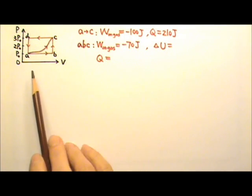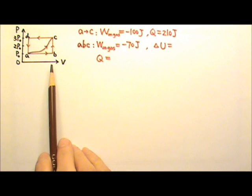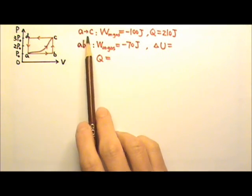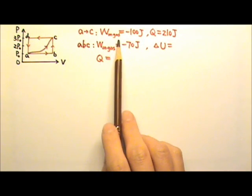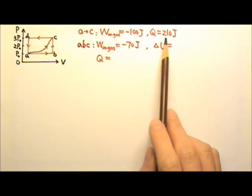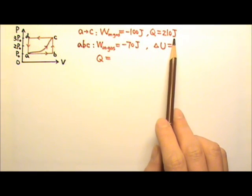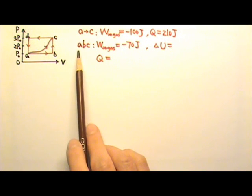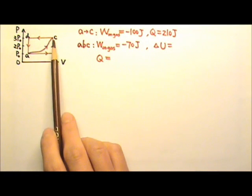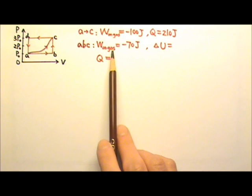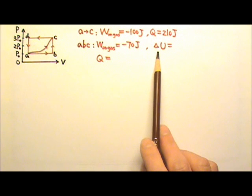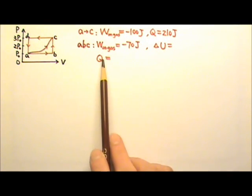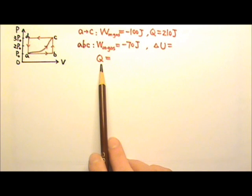This PV diagram shows the various states and state-changing paths of an ideal gas. When the gas is taken from state A to state C along this curvy path, the work done on the gas is negative 100 joules and the heat added to the gas is 210 joules. If the gas is taken along path ABC, the work done on the gas would be negative 70 joules. What is the change in internal energy of the gas for path ABC, and what is the heat added to the gas for that path?